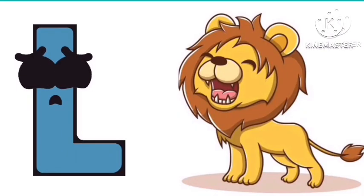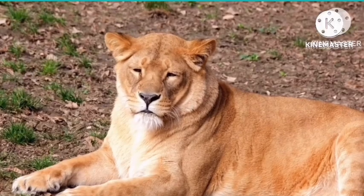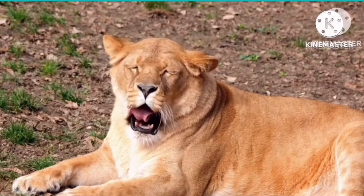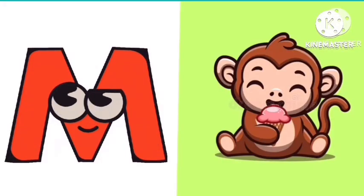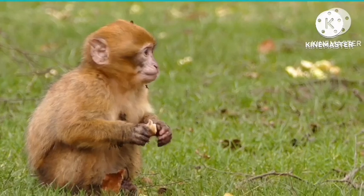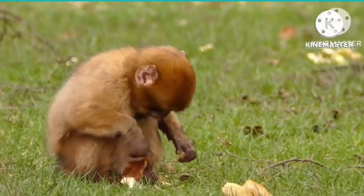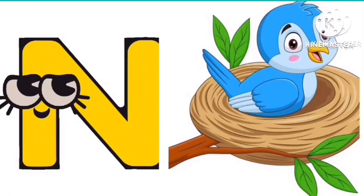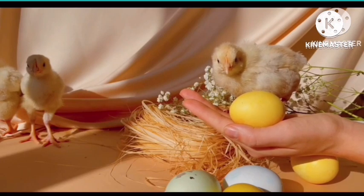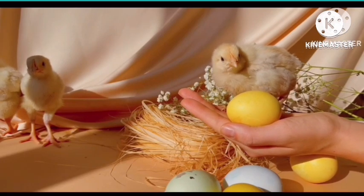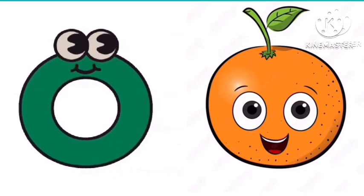L is for lion. M is for monkey. N is for nest. O is for orange.